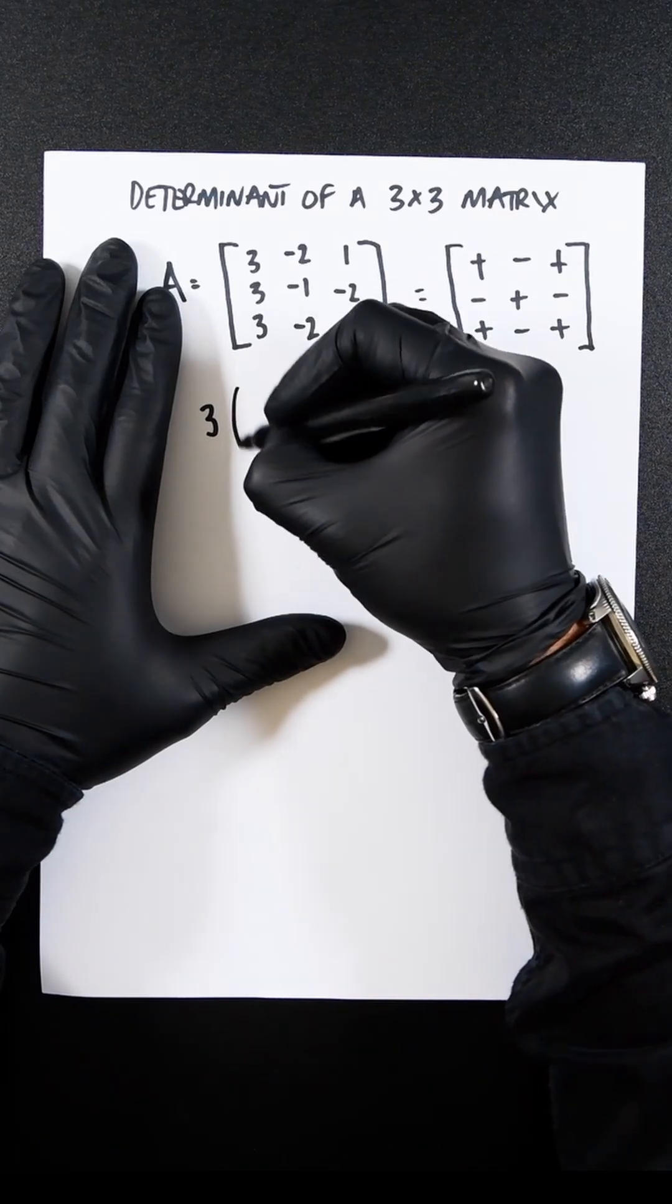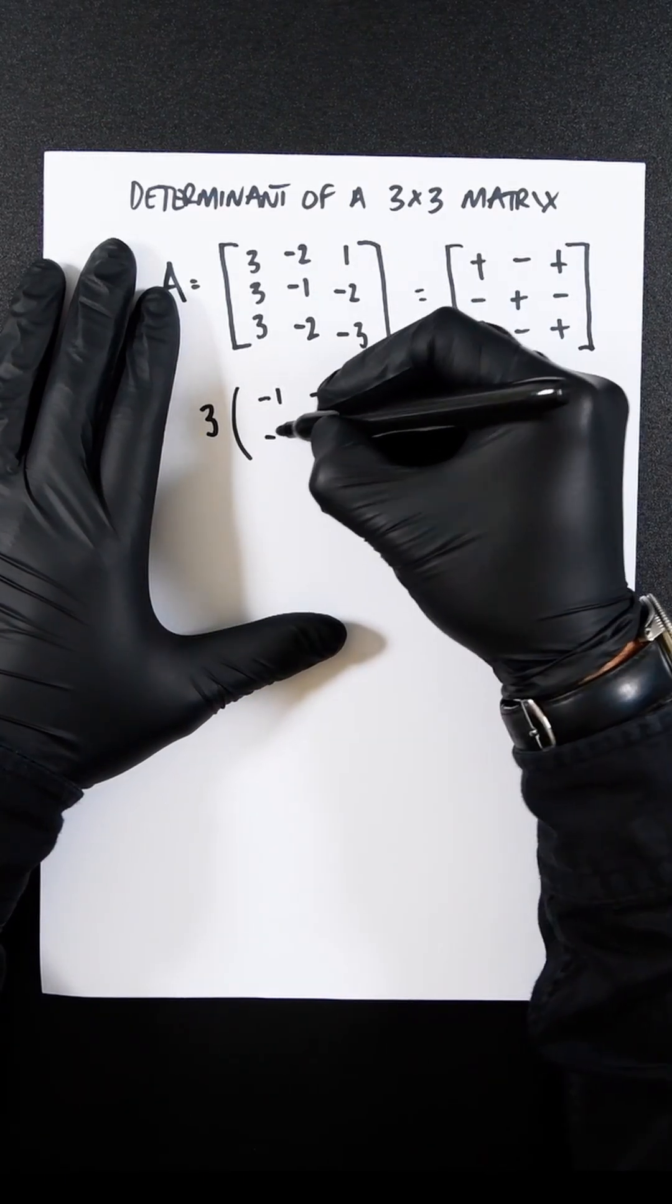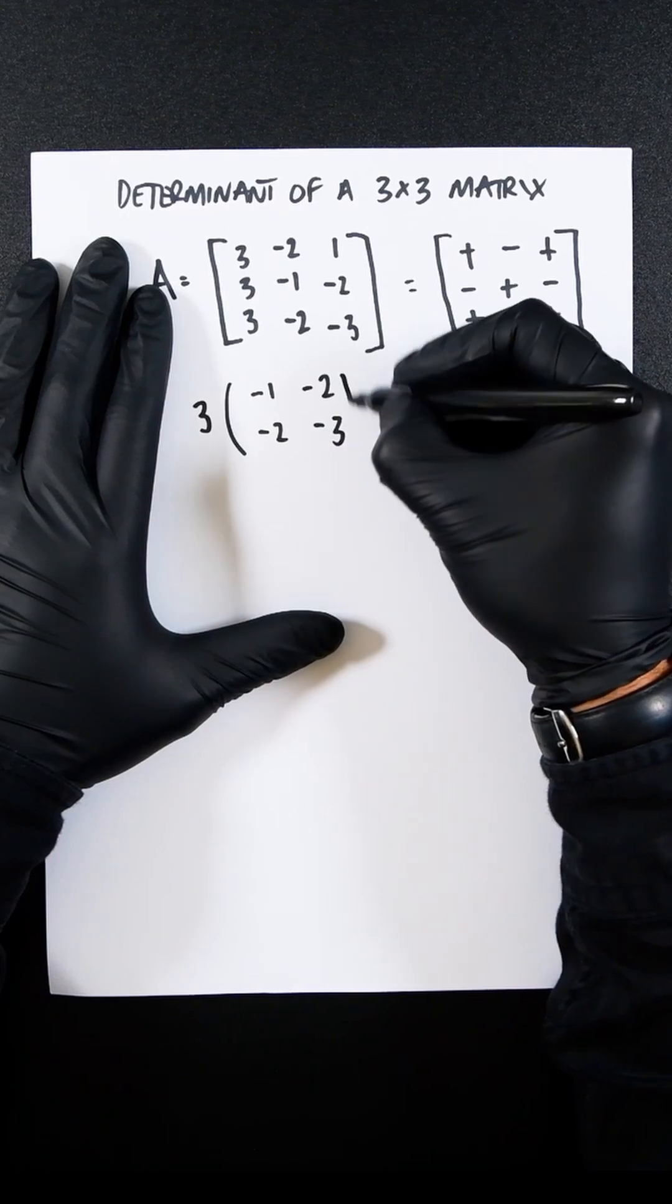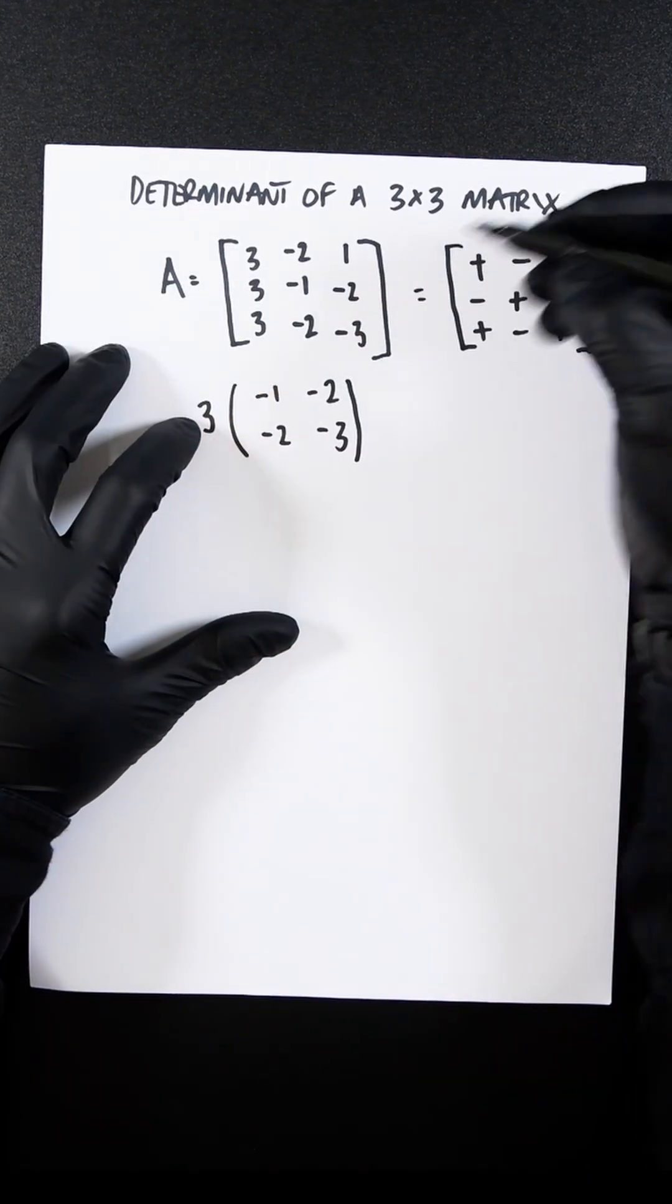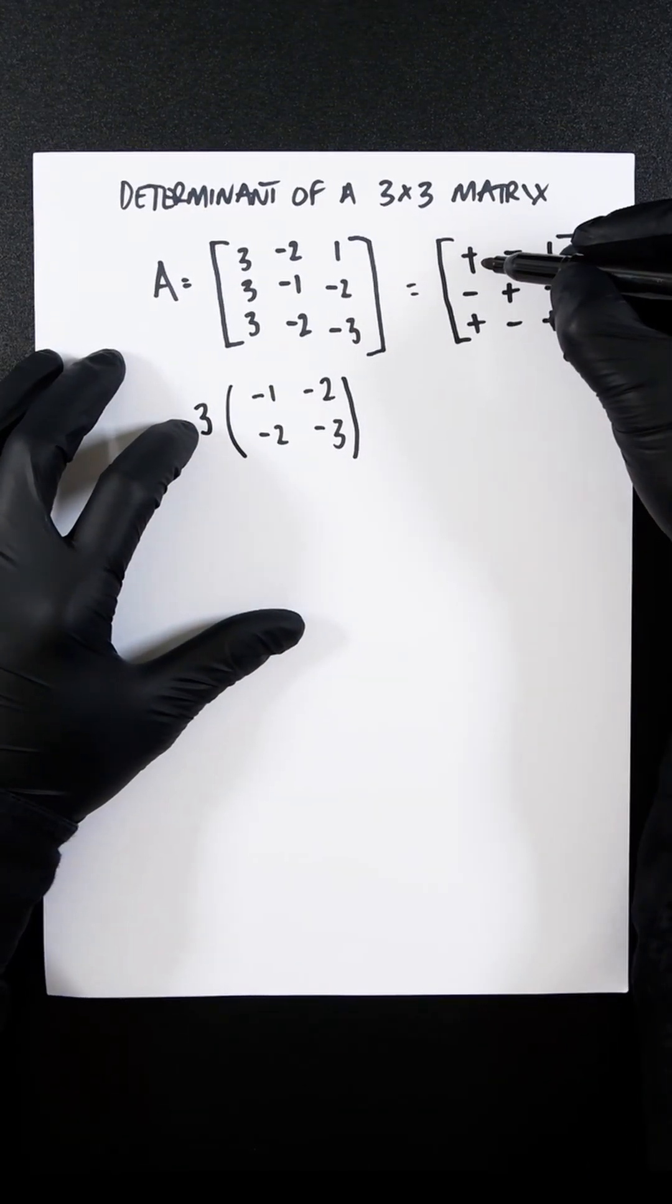So it now has minus 1, minus 2, minus 2, minus 3. And we know that this is positive because that symbol there is positive.